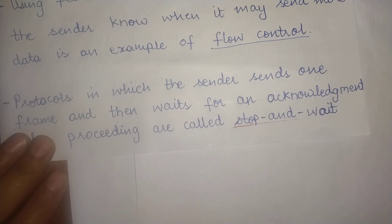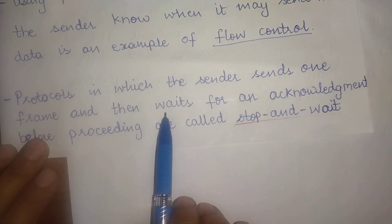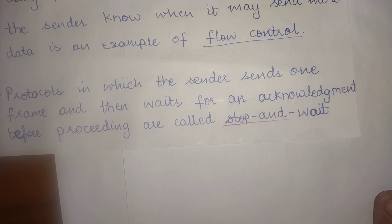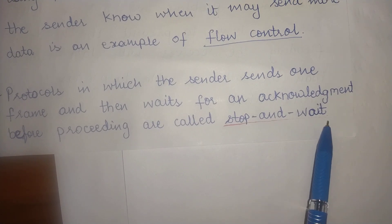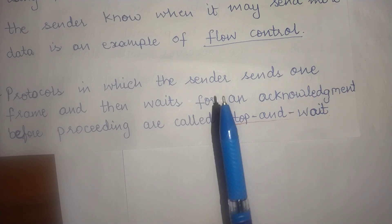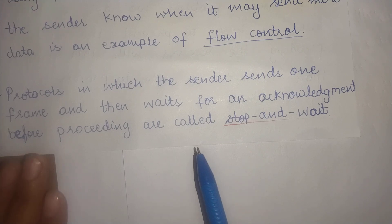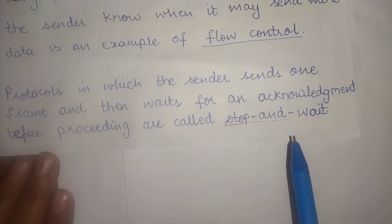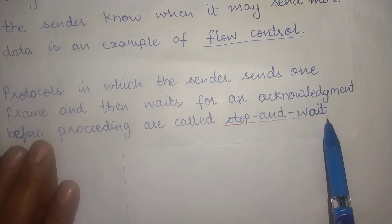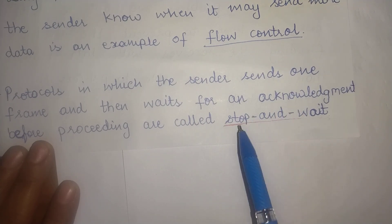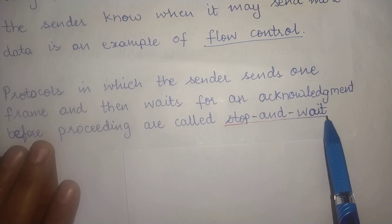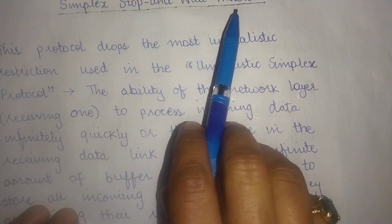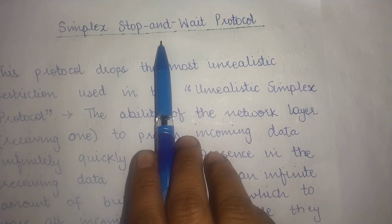Protocols in which the sender sends one frame and then waits for an acknowledgement from the receiver before proceeding are called stop and wait protocols. The sender sends one frame, stops, and waits for an acknowledgement. When it receives the acknowledgement it sends a new frame, then stops and waits again. This is exactly what is done in this protocol, hence it is called the stop and wait protocol or the simplex stop and wait protocol.